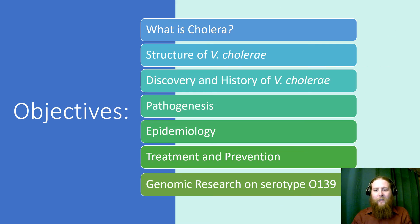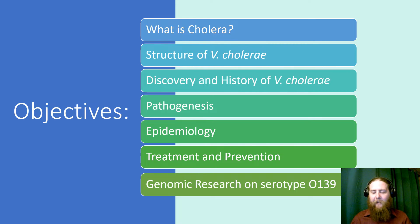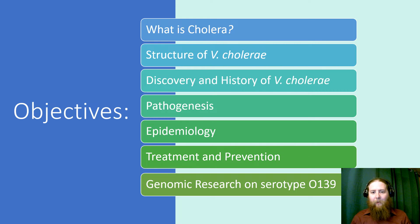Let's jump right into what we're going to be talking about today. The objectives are: what is cholera and what is the disease, how it presents in humans, the structure of Vibrio cholerae and why its structure determines its function, the discovery and history of the organism, its classification, its pathogenesis, its epidemiology, how to treat and prevent cholera, and finally a paper on genomic research of serotype O139.